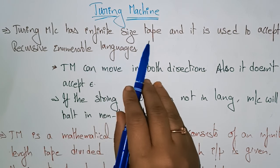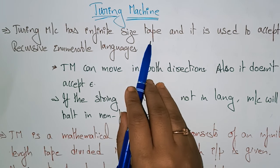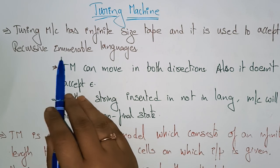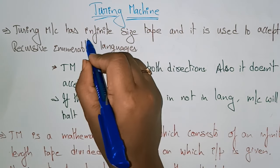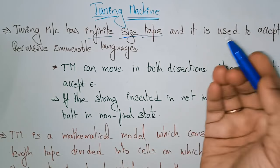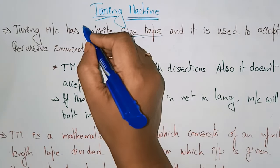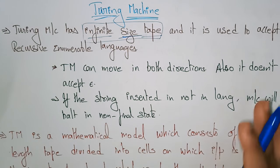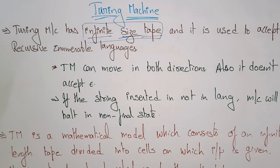A Turing Machine has an infinite size tape and it is used to accept the recursive enumerable languages. Recursive means the same set of rules or repeating, and enumerable languages means some set of items, a set of elements.